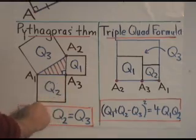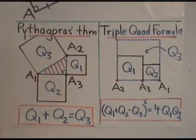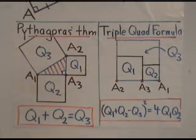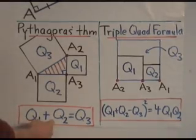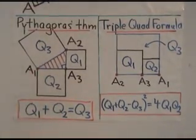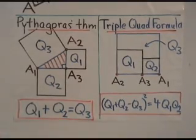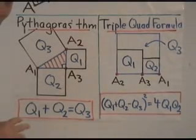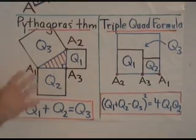Then the three quadrances of the sides, that square Q1, that square Q2, that square Q3, are related in the simplest of possible ways. Q1 plus Q2 equals Q3. That's actually the way Euclid formulated that result. No distances are involved. It's just about quadrances.